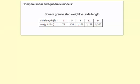So if you have a side length of two feet for a square slab, you would have a two foot by two foot or four square foot section. Okay, I want to compare linear and quadratic models.